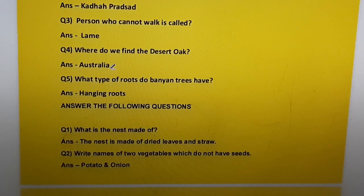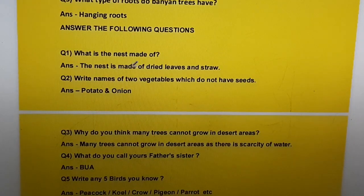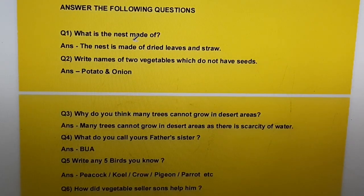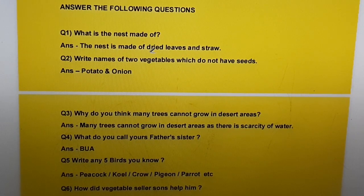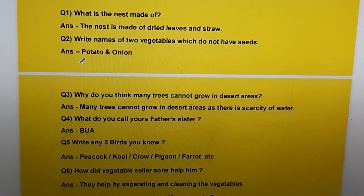Question four: The desert oak is found in Australia. Question five: Banyan trees have hanging roots. Question six about the nest: The nest is made of dried leaves and straw. Question — Write the names of two vegetables which do not have seeds: potato and onion.